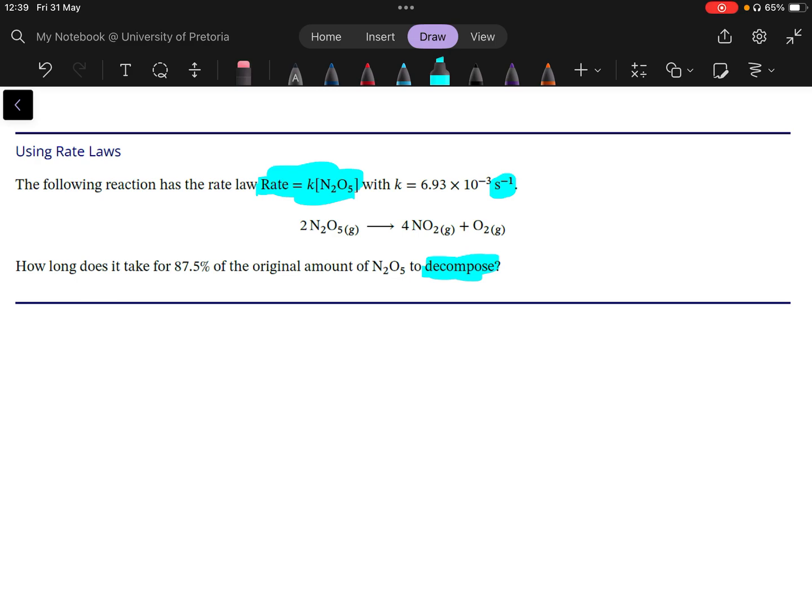It asks, how long does it take for 87.5% of the original amount of the N₂O₅ to decompose? In other words, how long does it take for the initial amount of N₂O₅ to decrease to 12.5% of the original amount? Now, the reason I said the units of K are important and the word decompose are important is all these words indicate to you that it is a first order reaction. So it's first order.